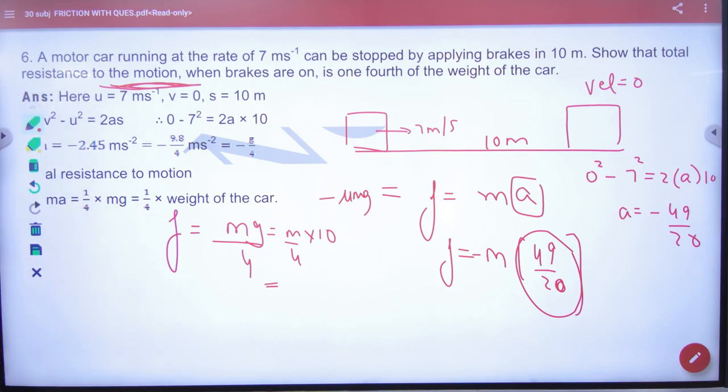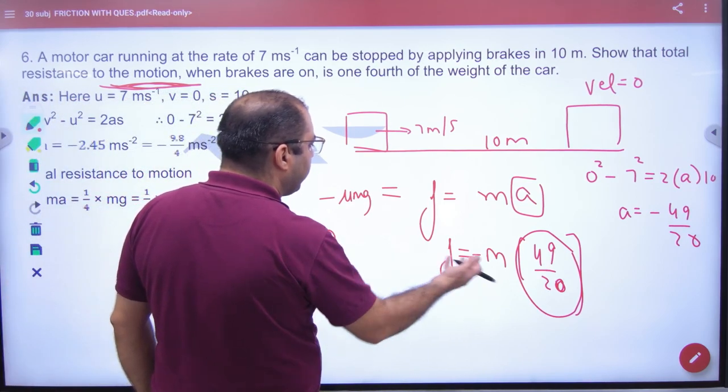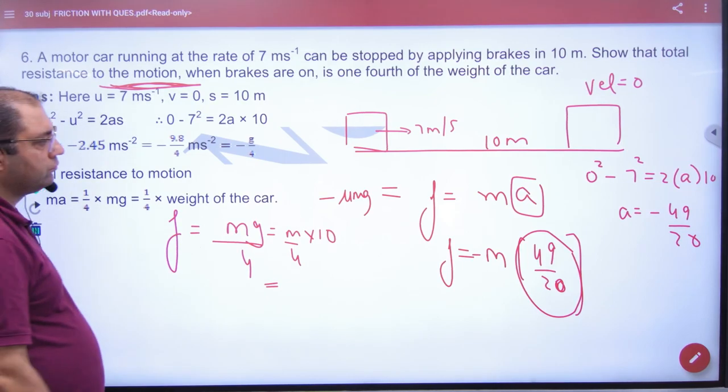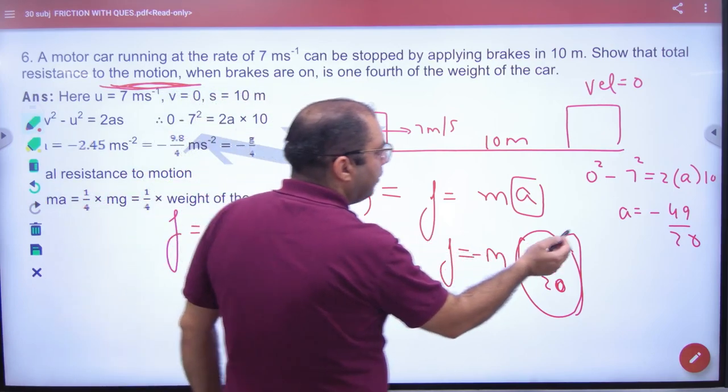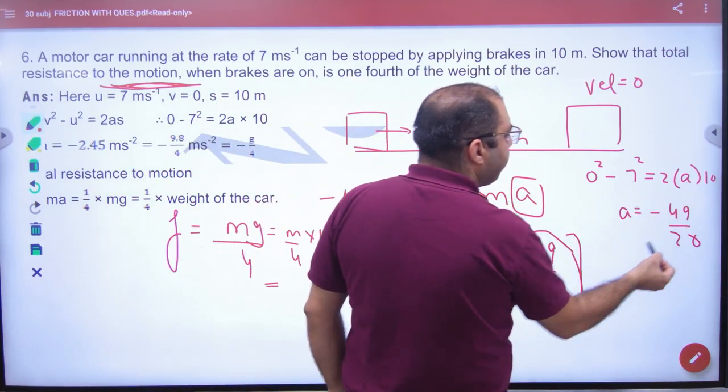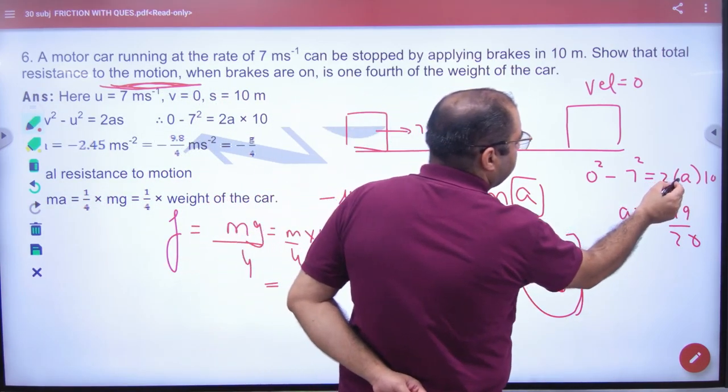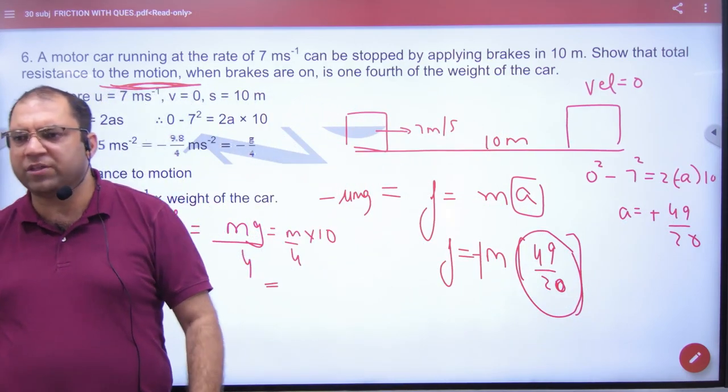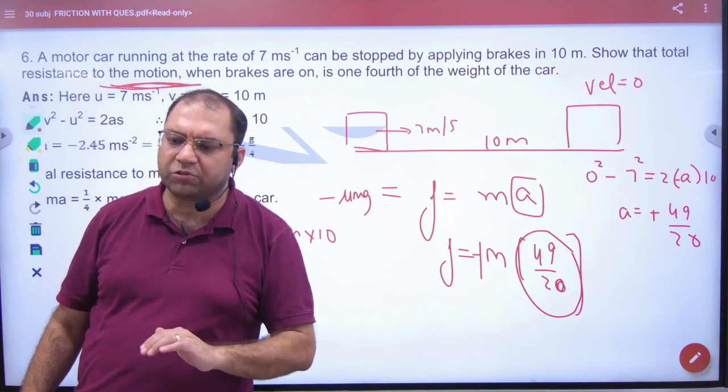Student asks: Sir, shouldn't the sign of a be negative? Teacher responds: The expression 0² - 7² already gives you the negative value automatically when you solve for a. You don't need to put negative in that equation.